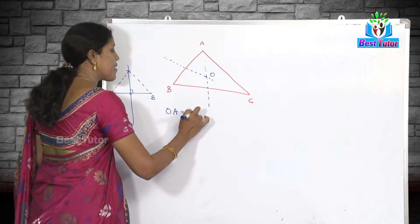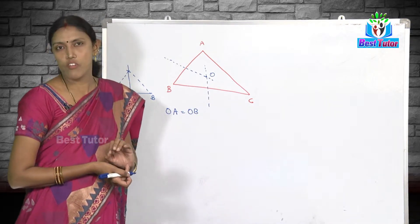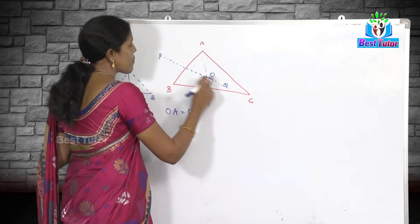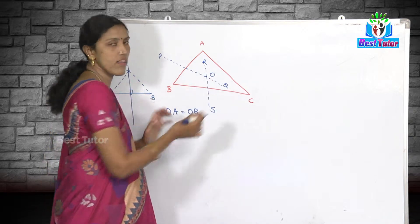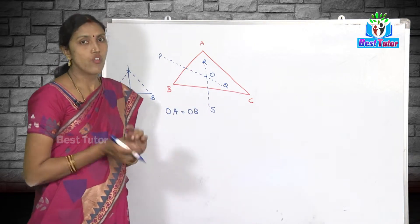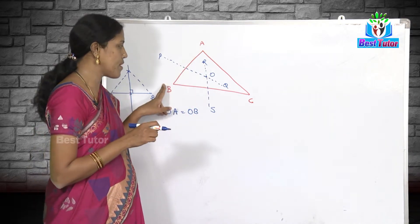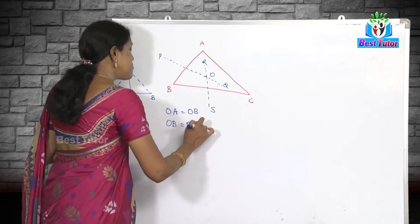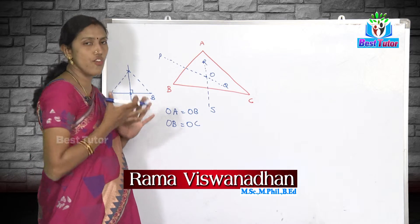So point O in particular is equidistant from A and B, meaning OA equals OB. Let me name the perpendicular bisector of AB as PQ, so every point on PQ is equidistant from A and B. Similarly, every point on RS, the perpendicular bisector of BC, is equidistant from B and C. Since O lies on both PQ and RS, O is equidistant from A and B, and also equidistant from B and C.